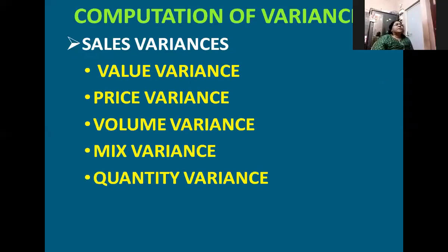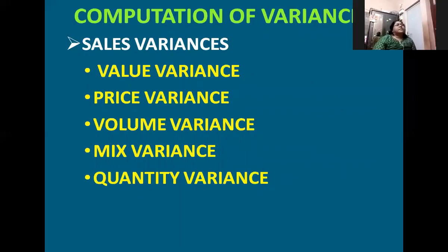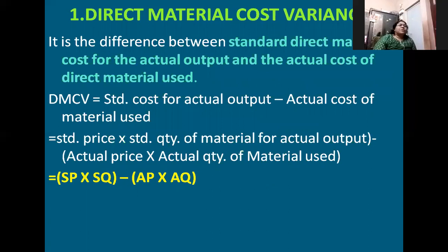Variances can be subdivided into two categories: cost variances and sales variances. Under sales variances, we have value variance, price variance, volume, mix, and quantity variances. First, we will deal with material variances.